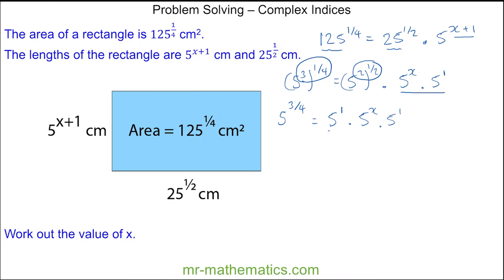Now I can use the multiplication rule again, where I'm adding these two powers. So I have 5 to the 3 over 4, is equal to 5 squared, multiplied by 5 to the x.